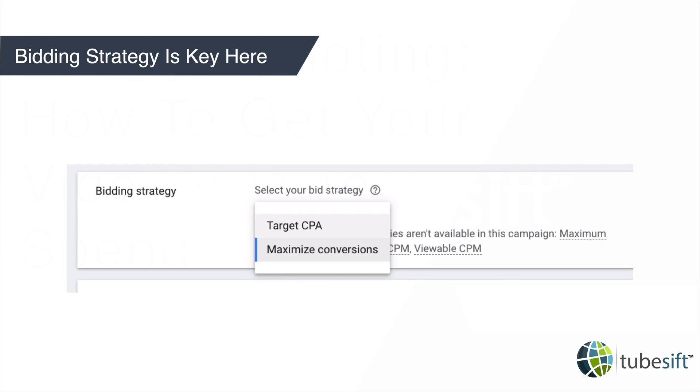We've got target CPA and maximize conversions. With target CPA, you're able to say, 'Hey Google, I want to pay $10 for a conversion.' Well, if Google has no data on what a typical conversion costs for you, a lot of times they won't run your ads because they don't want to overspend on that $10 you're saying you want to pay. We'll talk about how to fix that in a second here.